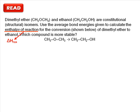It asks us to determine the enthalpy of reaction for the conversion of dimethyl ether to its structural isomer, ethanol. To do this, it tells us that we'll need to use the average bond energies given in the table.